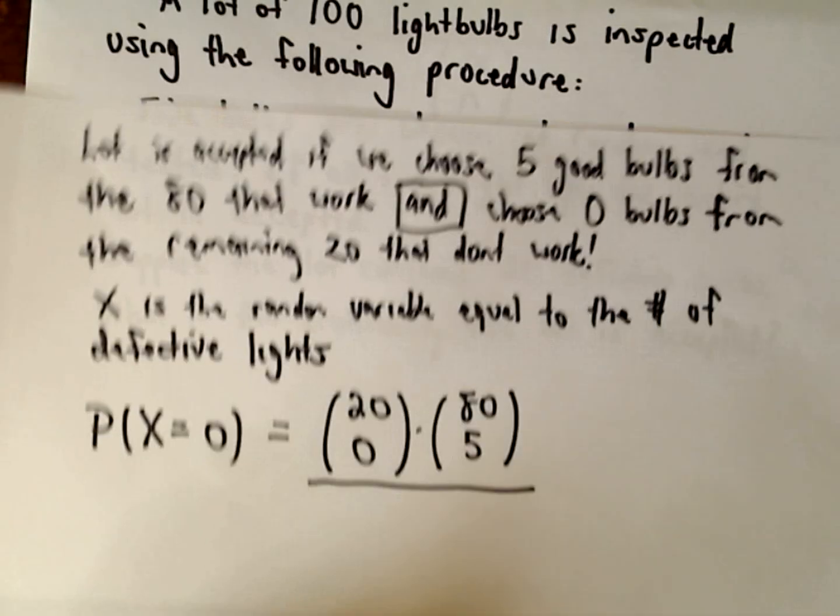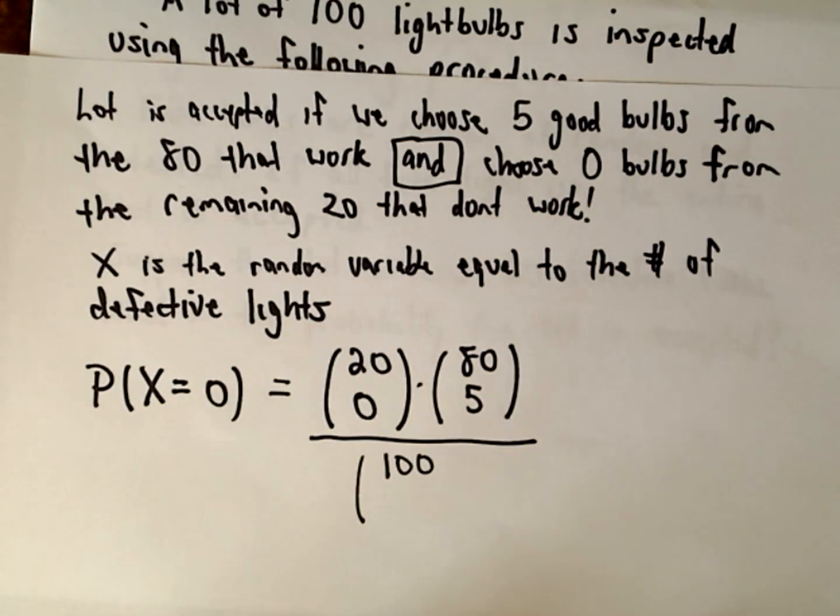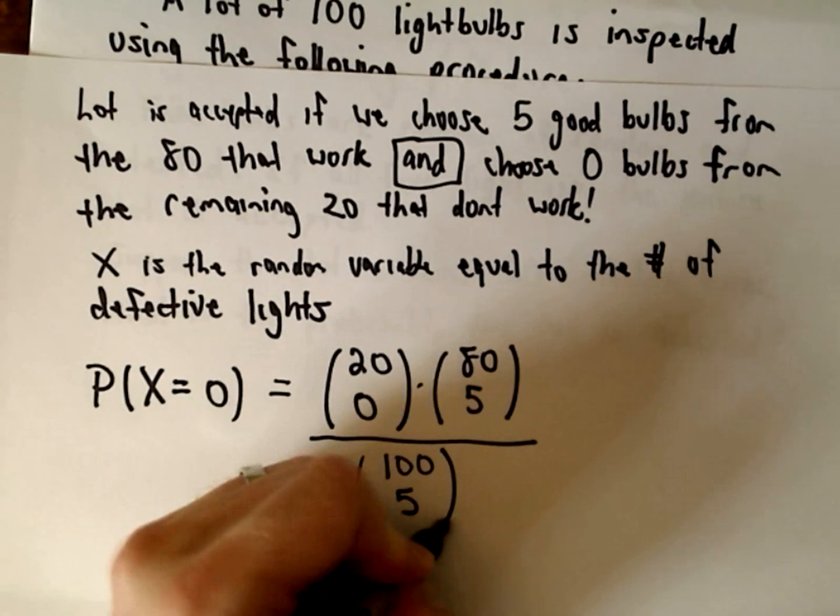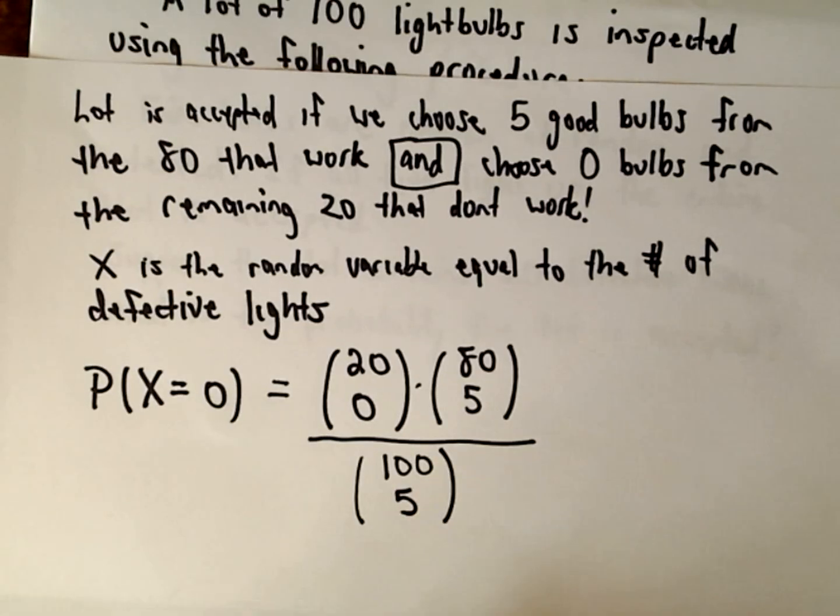Well, so we're going to choose zero from the 20 that are defective and from the remaining 80 that do work we want to choose five of those. That's going to be my numerator and we're going to divide that by the total - 100 choose 5. That's how many we're computing in general.